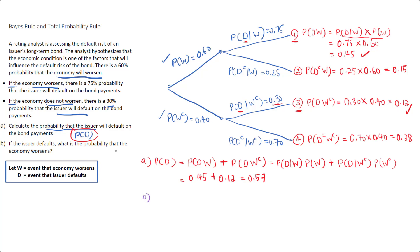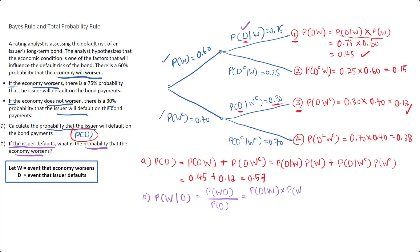For Question B, if the issuer defaults, what is the probability that the economy worsens? We are looking for P(economy worsens | issuer defaults). By the definition of conditional probability, this equals the probability that the economy worsens and the issuer defaults, divided by the probability that the issuer defaults. To get Bayes' rule, we express the numerator in terms of conditional probability: P(default | economy worsens) × P(economy worsens), divided by P(default). We already have all these components from our earlier calculations.